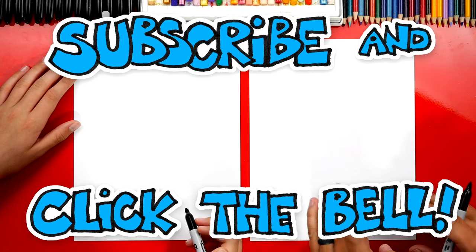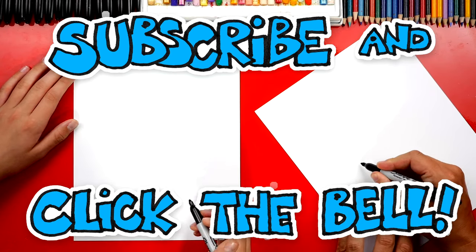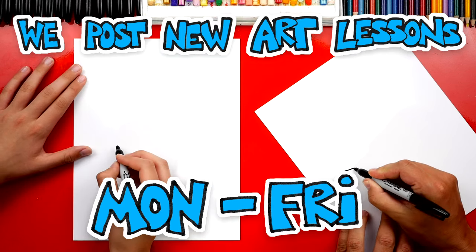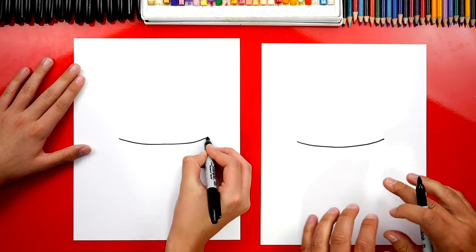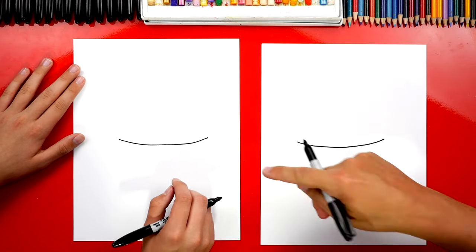We're first gonna draw the top of our bowl. We're gonna start right here in the middle of our paper and we're gonna draw a curve that comes down and back up. I like turning my paper sideways sometimes that helps to draw the line.